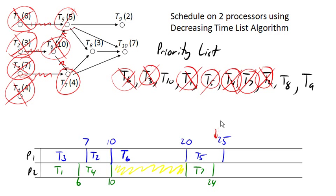When task seven completes, does anything become ready? The answer is no, because task eight still has another requirement. So once again, processor two is going to be sitting idle for a little while until we move forward to time 25.